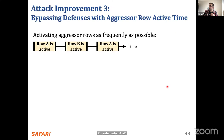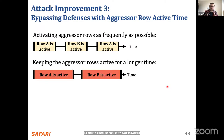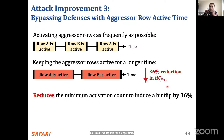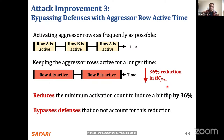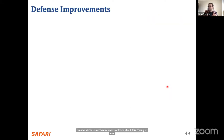Another attacker improvement: keeping aggressive rows active for longer increases row hammer vulnerability. Based on our observations, this can reduce HC_first by 36%. If a defense mechanism is deployed and configured for a particular HC_first value, but by keeping the row active longer you reduce HC_first, you can induce row hammer bit flips at lower activation counts than before — counts the row hammer defense mechanism doesn't account for — allowing you to bypass the defenses.